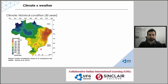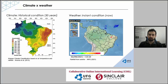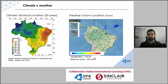Here we have different patterns of current rainfall across Brazil. But what is weather? Weather is the current condition — what is happening right now, at this moment. Here we have the same map showing the blue areas where we have rainfall at the exact minute I retrieved data from our national weather service. So climate is a historical condition, and weather is what is happening now at the moment you look at that variable. Climate refers to a long period, while weather refers to a short period.